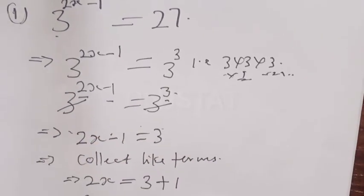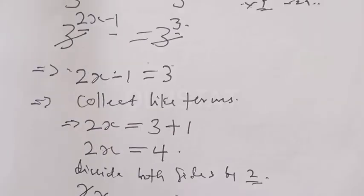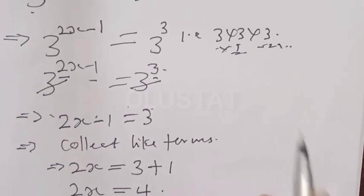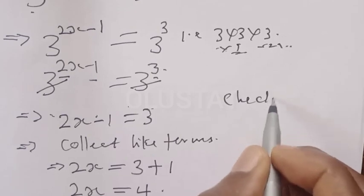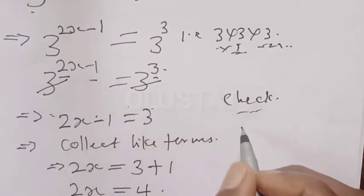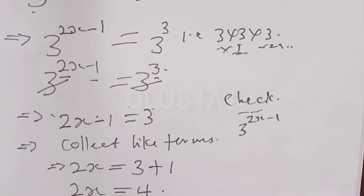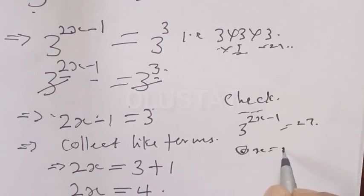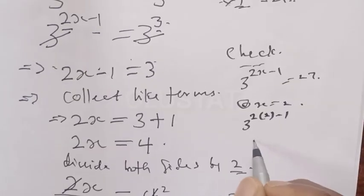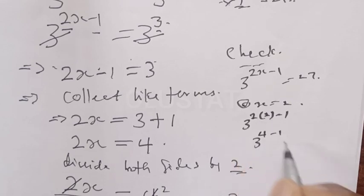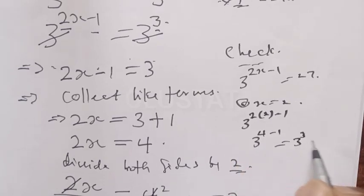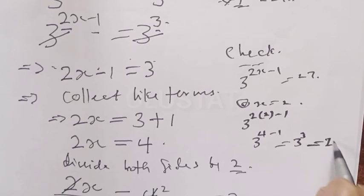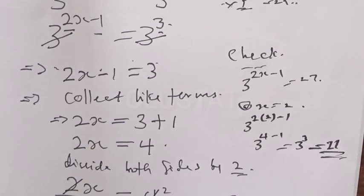Now let's check if our answer is correct. We said x is equal to 2. The left hand side is 3 raised to power 2x minus 1. At x equals 2, we have 3 raised to power (2 times 2 minus 1), which is 3 raised to power 3, and 3 raised to power 3 is equal to 27. Our answer is correct.